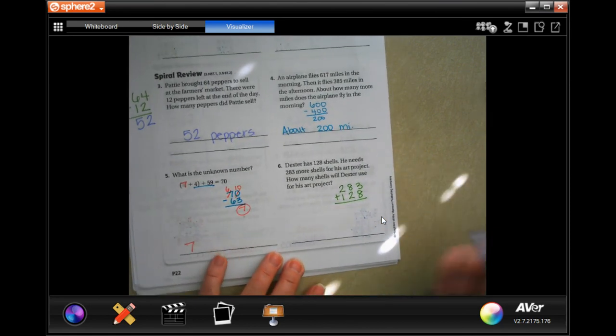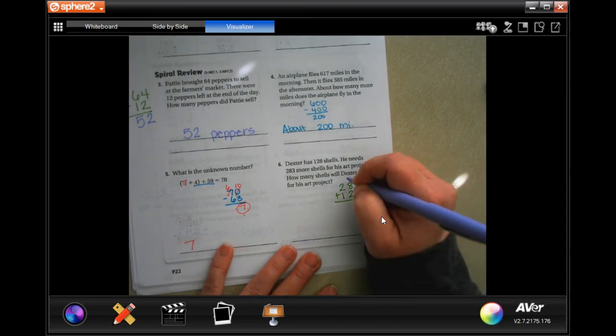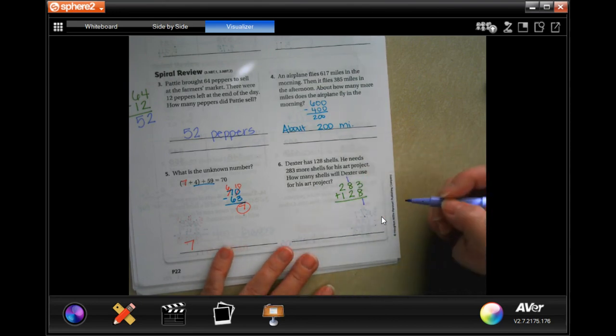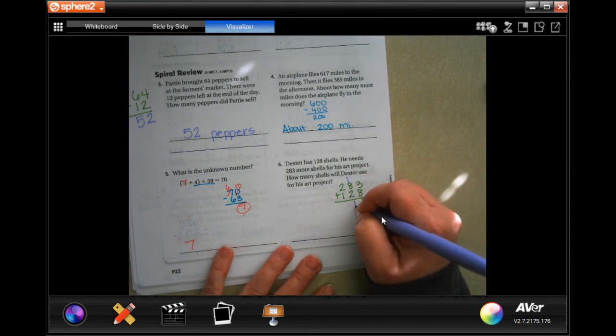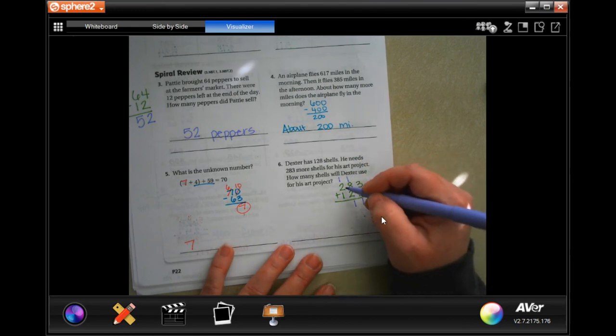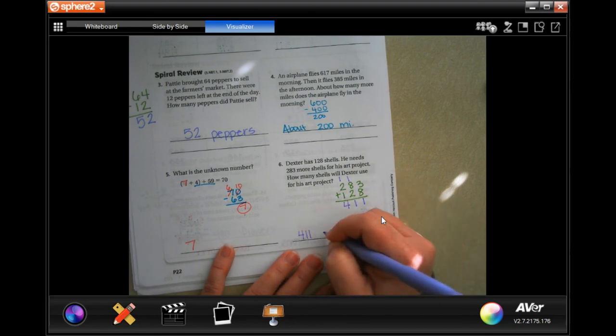So 3 plus 8 is 11. One down, carry the 10. 1 plus 8 is 9. Plus 2 more is 11. Same thing. One down, carry the 10. 1 plus 2 is 3. Plus 1 more is 4. So, 411 shells.